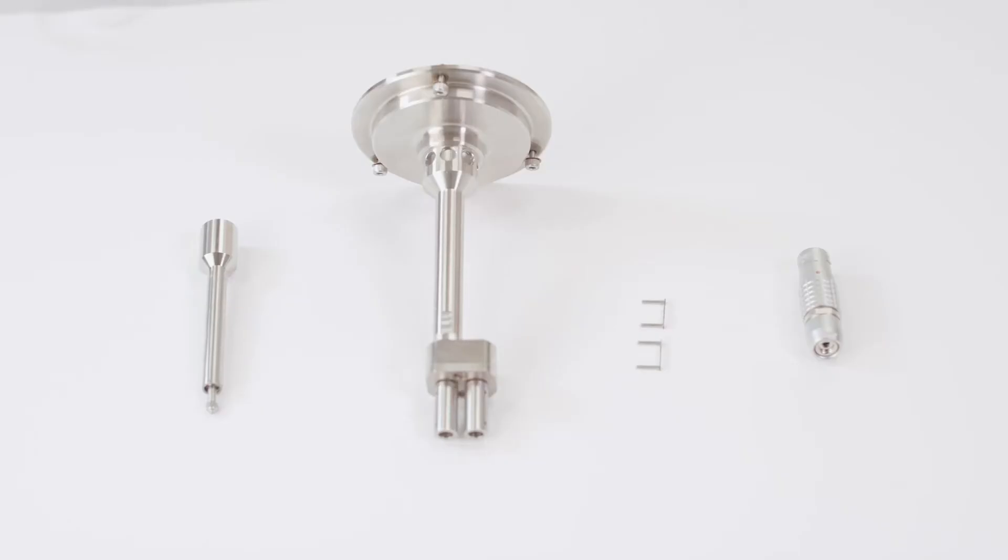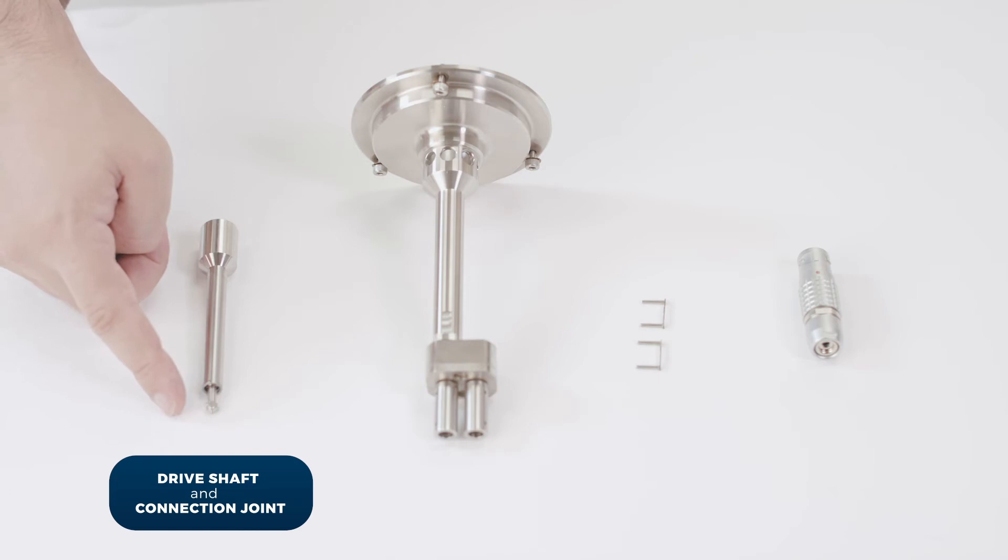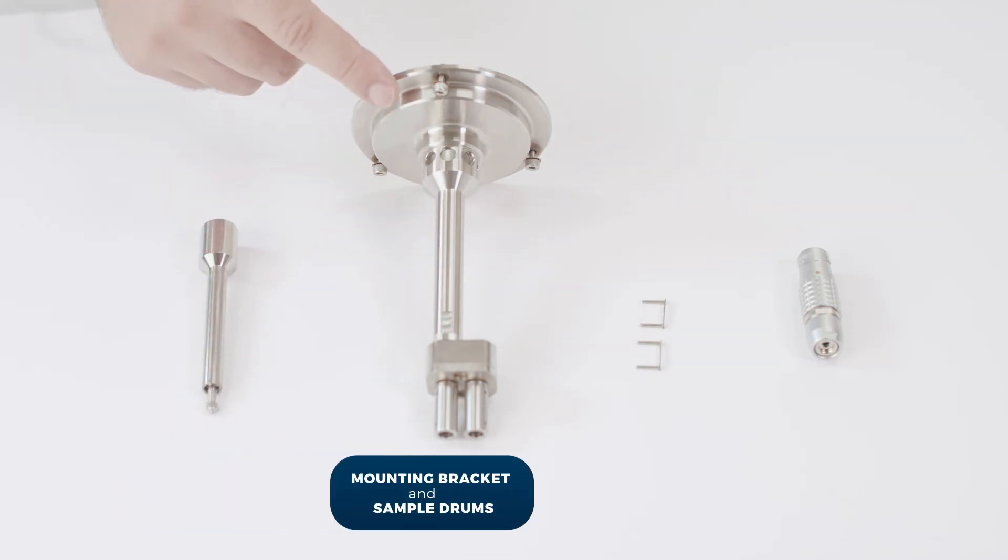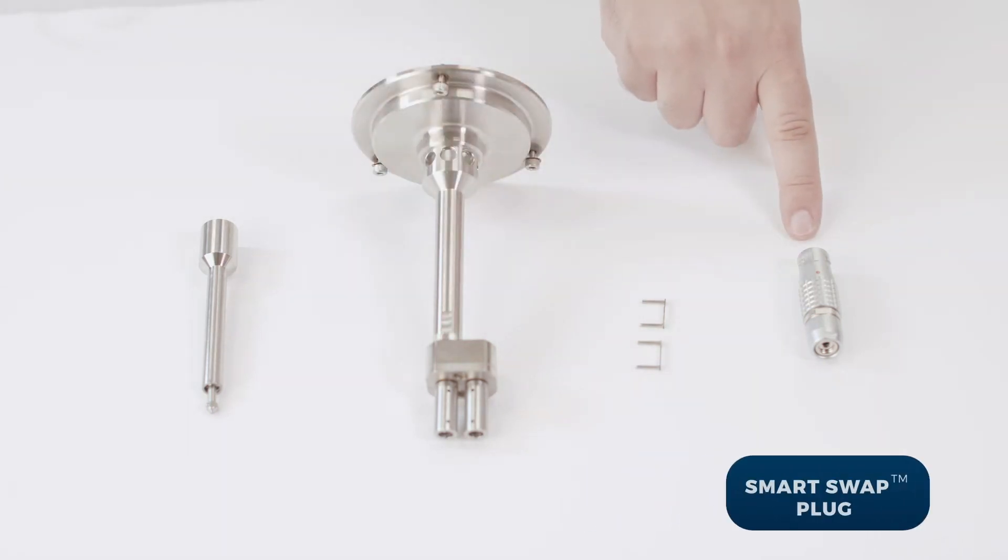These are the parts of the extensional viscosity accessory: the driveshaft and connection joint, mounting bracket, sample drums and clips, and smart swap plug.